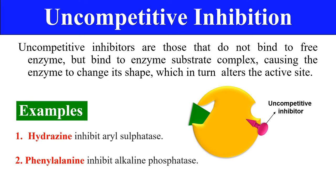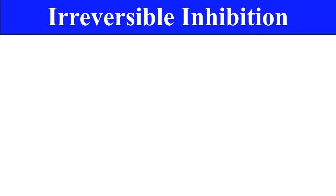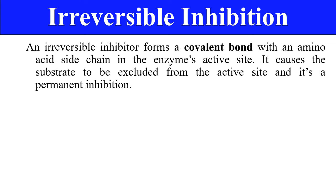Examples of uncompetitive inhibitors include: first, hydrazine, which acts as an uncompetitive inhibitor of aryl sulfatase. Second, phenylalanine, which inhibits alkaline phosphatase in an uncompetitive manner. So those were the subtypes of reversible inhibition: competitive, non-competitive, and uncompetitive.